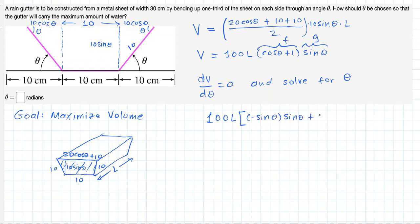That is cosine of theta, times the other function in its original form, cosine of theta plus 1. This is the derivative, and that should be set equal to 0.